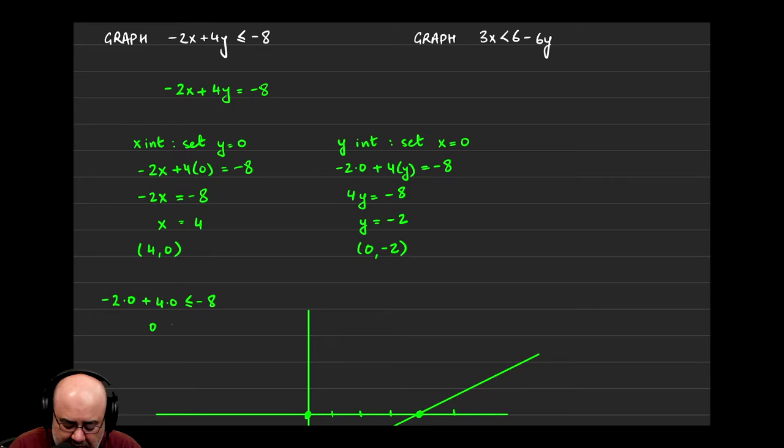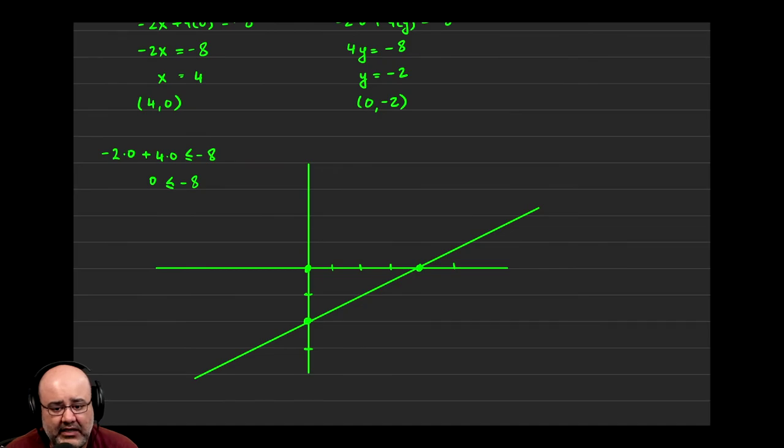0 + 0 is just 0, and we get 0 ≤ -8. Is that a true statement or a false statement? If it were true, we should shade on the side of our test point (0, 0). If it is false, we should shade on the opposite side, the side which does not contain the point.